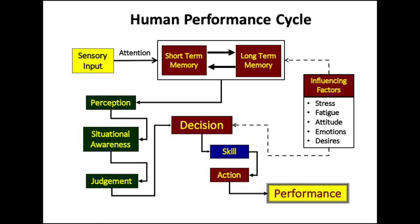In this entire scheme of interrelated activities, the efficient information processing or memory functions, and the ability to make choices and act upon them, are affected by some external factors such as stress, fatigue, attitude, emotions, and desires. From this model, we find that decision-making has a pivotal position in the schematic process of human performance.